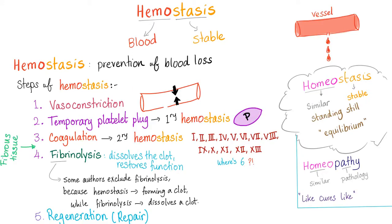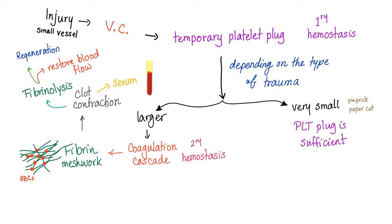Hemostasis has many steps: temporary platelet plug, coagulation, etc. What was the job of TPA? To destroy the clot, causing fibrinolysis. What is the job of tranexamic acid or aminocaproic acid? To preserve the clot and prevent fibrinolysis. TPA destroys the clot and causes fibrinolysis, but not under aminocaproic acid's watch, because it's going to preserve the fibrin meshwork.